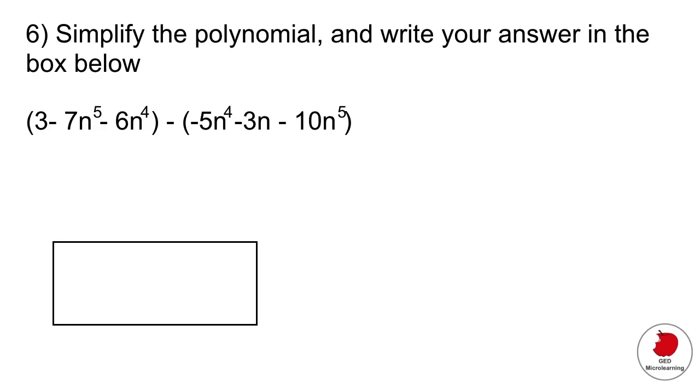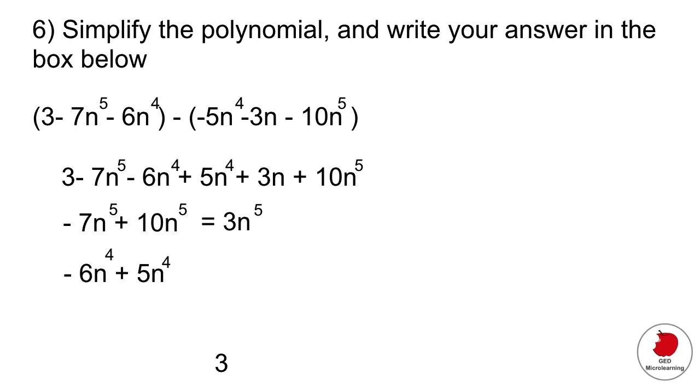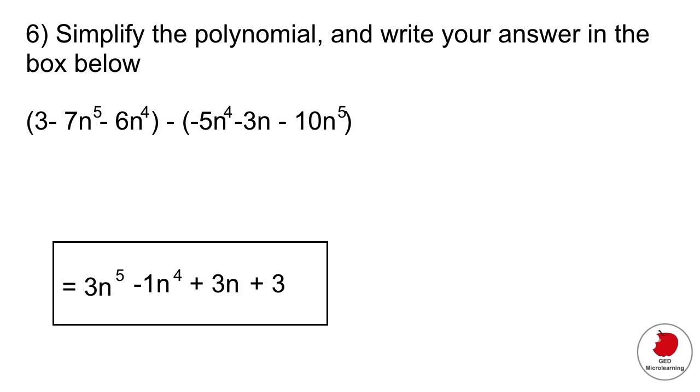This is a fill in the blank question which asks you to simplify the polynomial and write your answer in the box below. So the first thing that you want to do is you want to multiply things out so you end up with this expression and then the first thing that you're going to do is that you're going to combine like terms and by combining like terms what we mean is that you're going to get numbers that have the same exponent. So we're going to start with the bigger ones, those numbers that are raised to the fifth power so 7n^5 and -5n^5 + 10n^5 that gives you 3n^5. Then we're going to add terms that are raised to the fourth power so -6n^4 + 5n^4 that gives you -1n^4. There's only one term with n so that's that and then we have a whole number which is 3. So if you rewrite your equation it would look like this.